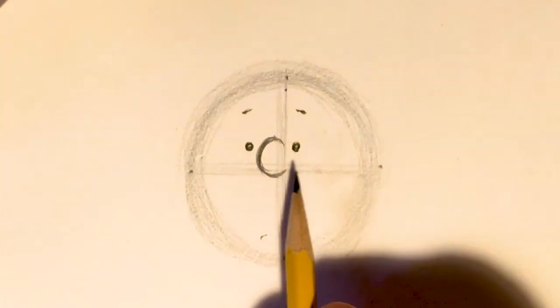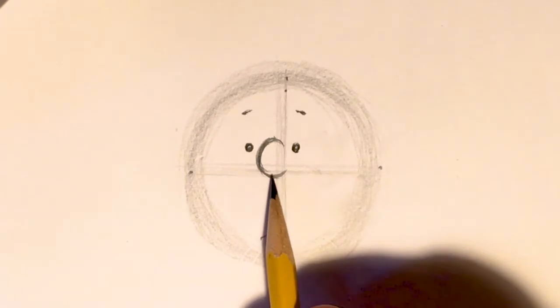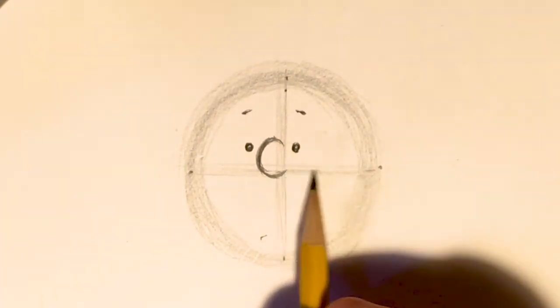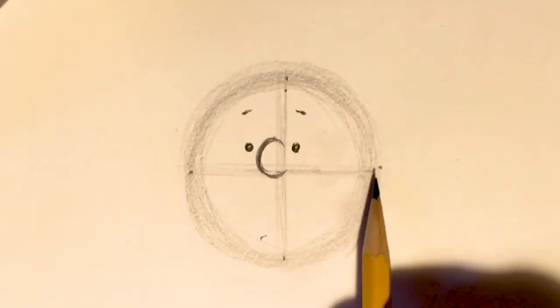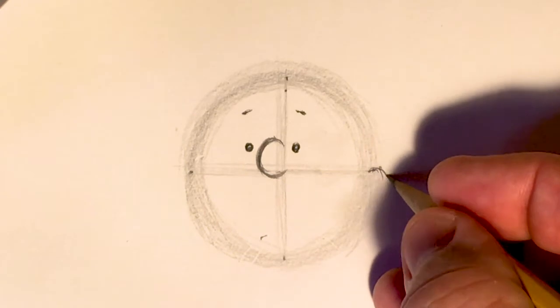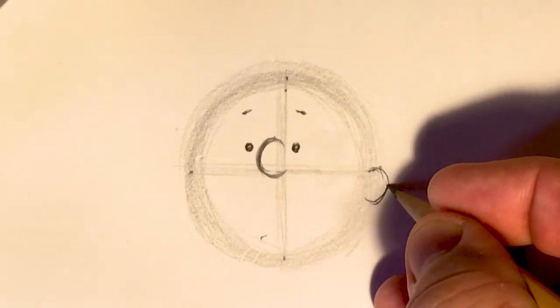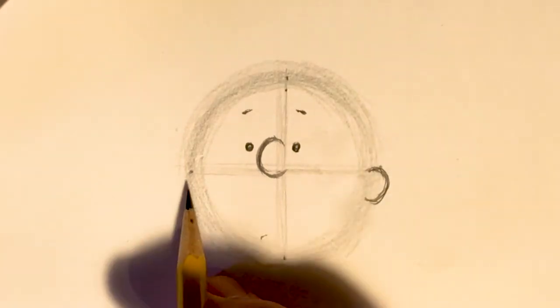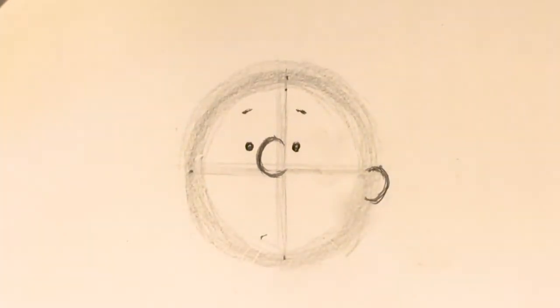One more step before we get that jaw line on there. I'm gonna add his ear. Now on the Peanuts characters, this is true of every one of them, the bottom of the nose always lines up with the top of the ear. Just follow your guideline over. Right there. That's where the top of the ear goes. So I'm just gonna snap another letter C on here. I'm gonna do the same thing on the other side, but before I do that, I'm gonna take just a moment and draw his cheek in.